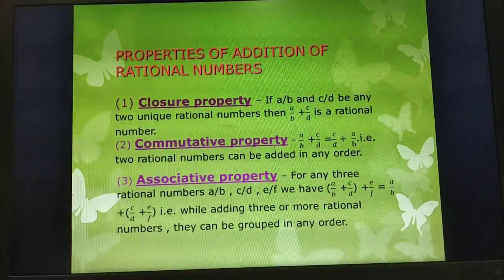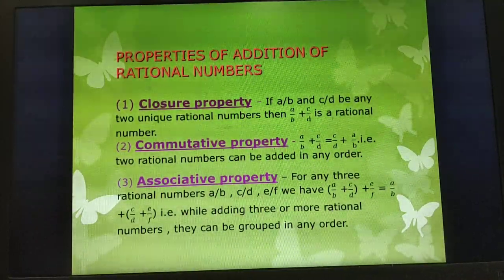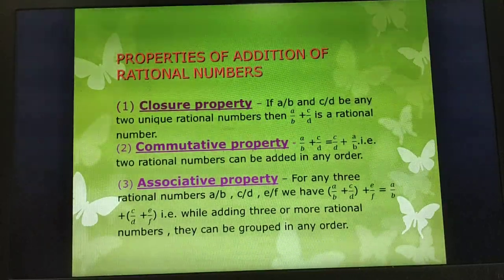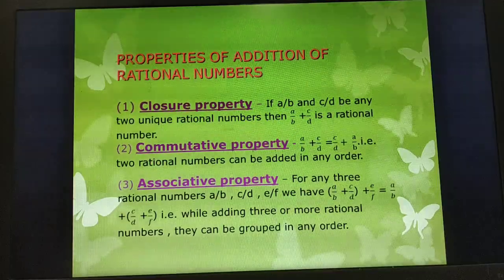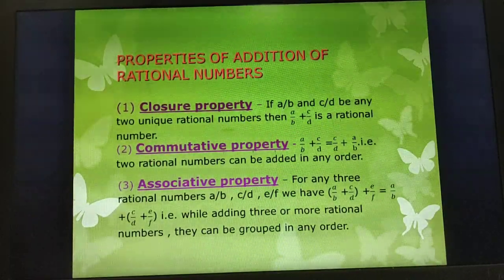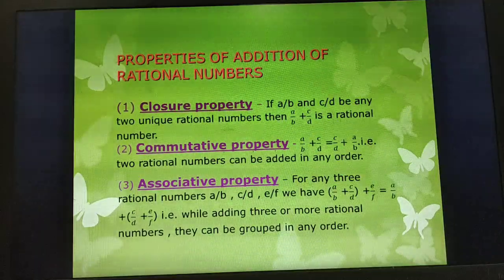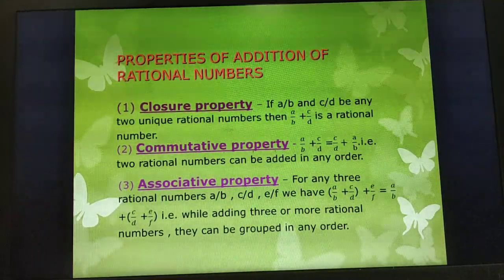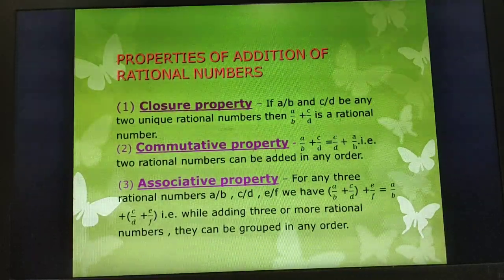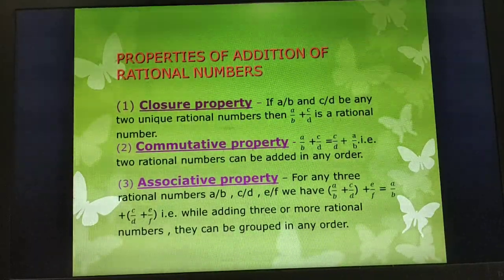Third is the associative property. For any three rational numbers A/B, C/D, E/F, we have (A/B + C/D) + E/F = A/B + (C/D + E/F). On the left-hand side, the first two rational numbers are bracketed, and on the right-hand side, the second and third rational numbers are bracketed. While adding three or more rational numbers, they can be grouped in any order.